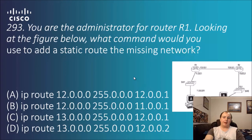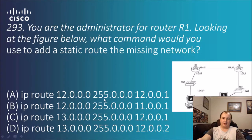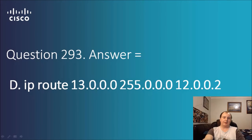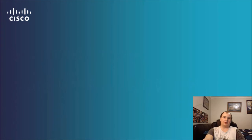Question 293: you are the administrator for router R1. Looking at the figure below, what command would you use to add static routes to the missing network? We have computer A on the .11 network, router on the .12 network, and router 2 on the .13 network. Since we are on router one, the .12.0.0.1 isn't a missing network — that's our network. Getting to the next network via .12.0.0.2 on router 2 makes D the answer: IP route 13.0.0, 255.0.0, 12.0.0.2 with zeros.